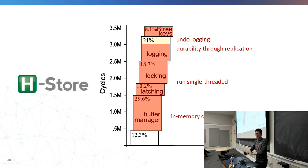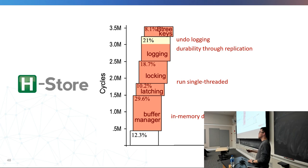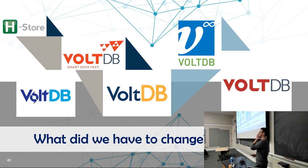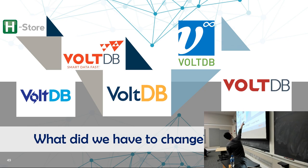After HStore was commercialized as VoltDB, what things did we have to change? There are so many logos — it's surprising how many logo changes a startup can have. I joined VoltDB as an intern in 2015 and came back as a full-time engineer in 2016. The first thing we had to change is disk durability, because no one is really interested in a completely in-memory OLTP system — they don't feel safe with only active-active replication. There's a huge gap between theory and how people actually believe things work.